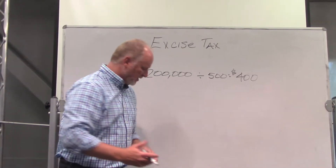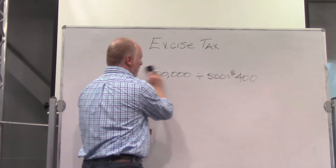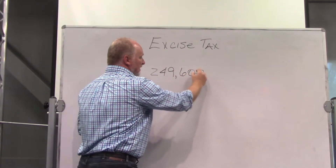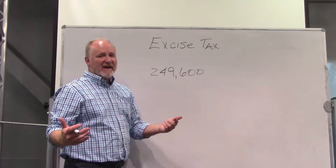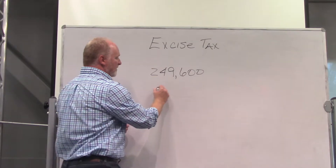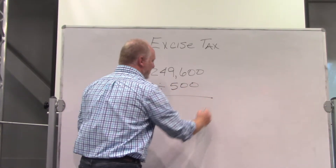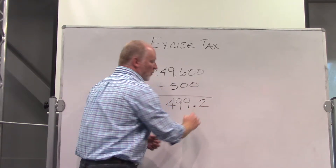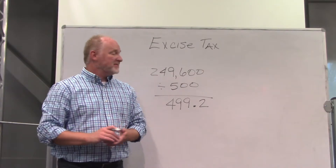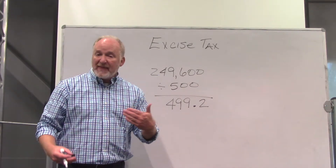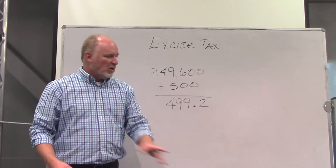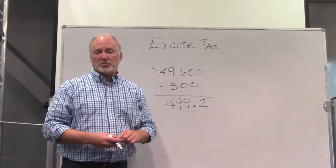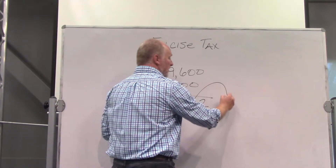For example, what if the sale price were $249,600? You can see that it's not evenly divisible by $500. Simply take that number, divide it by $500, and you'll see a number in your calculator that looks roughly like $499.2. The excise tax answer is never going to be point anything — remember $1 per $500 or any portion thereof — so you simply round up to the next whole dollar. $499.2 becomes $500.